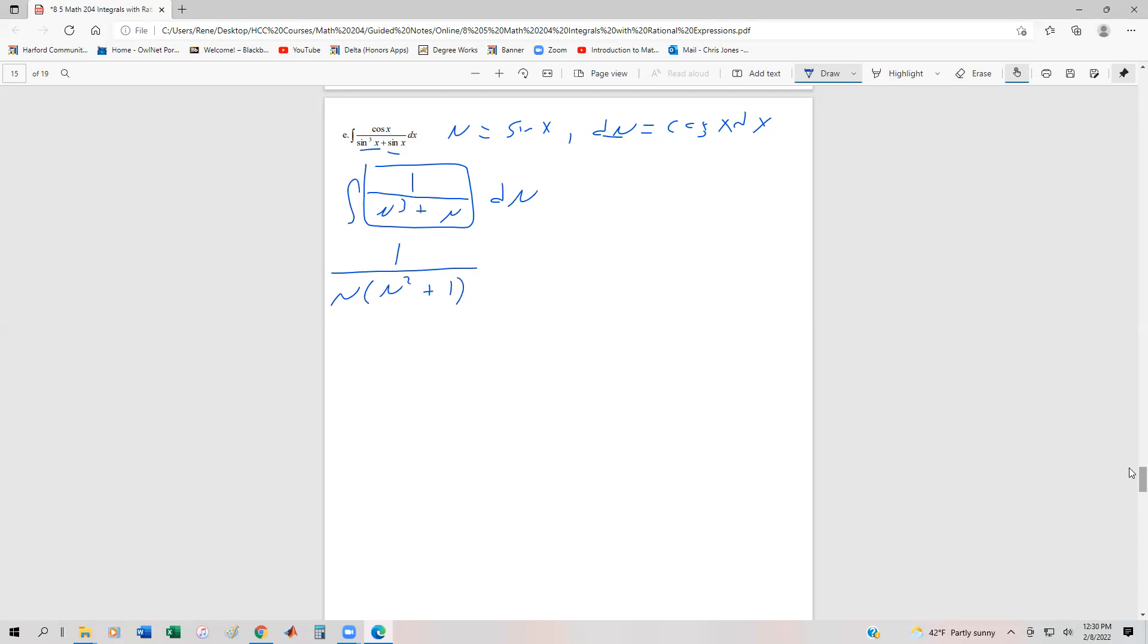And at this point, now we see that there is one linear term and one quadratic term. So we're going to write this as A over u for the linear term. And then we're going to have Bu plus C, not Bx plus C, because everything's in terms of u, divided by u squared plus one.